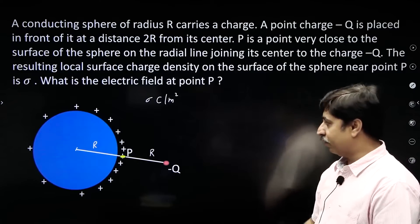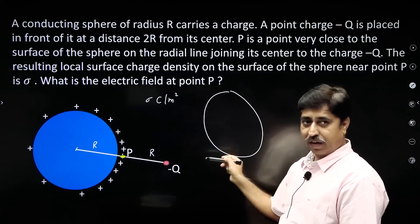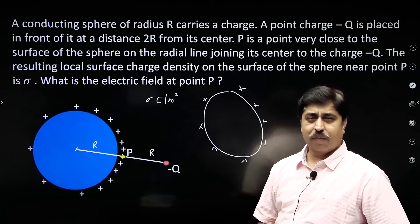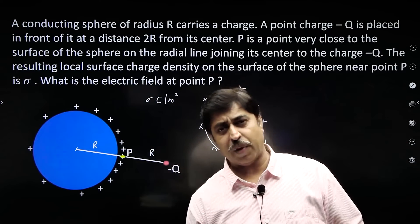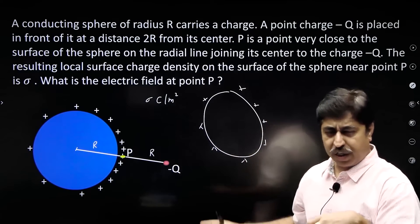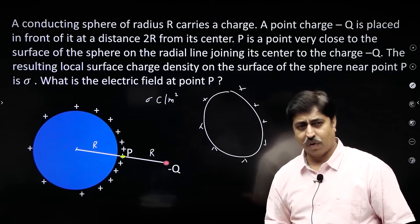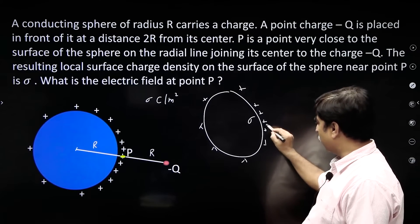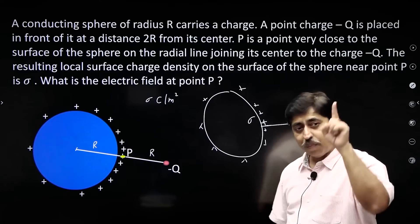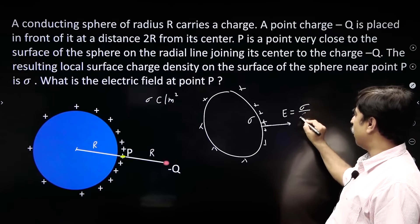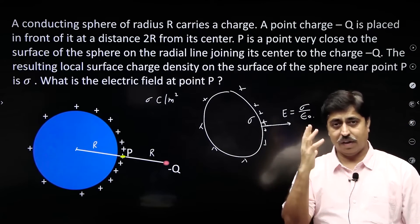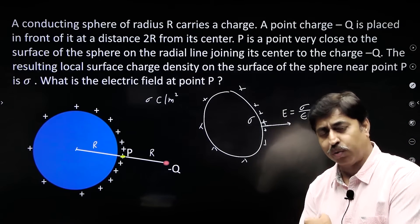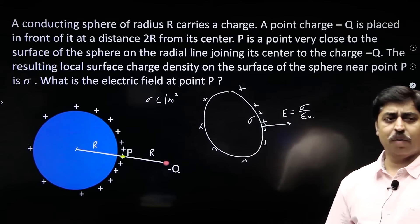All of you have studied that if there is a conductor and you give some charge to it, the charge may not spread evenly on its surface. When it is a sphere and it is isolated — meaning no other nearby charge — the charge spreads uniformly. If the charge per unit area at a location is sigma, then very close to the surface the field is perpendicular to the surface and its strength is sigma by epsilon naught. This is a property of conductors.